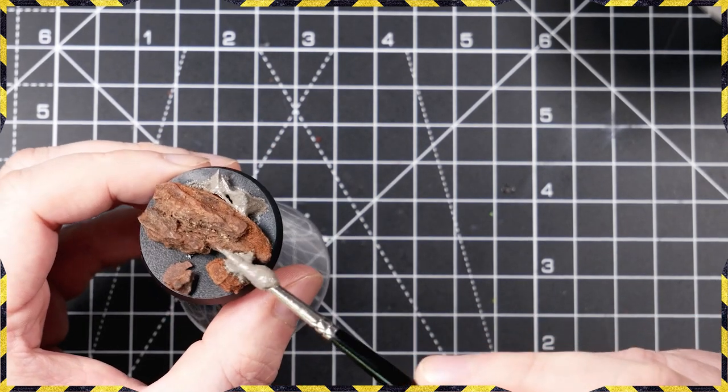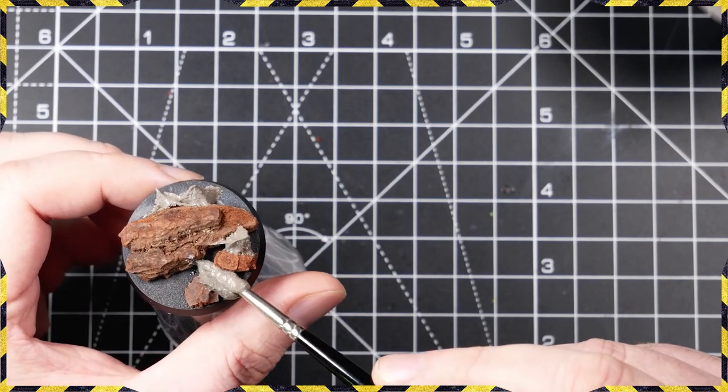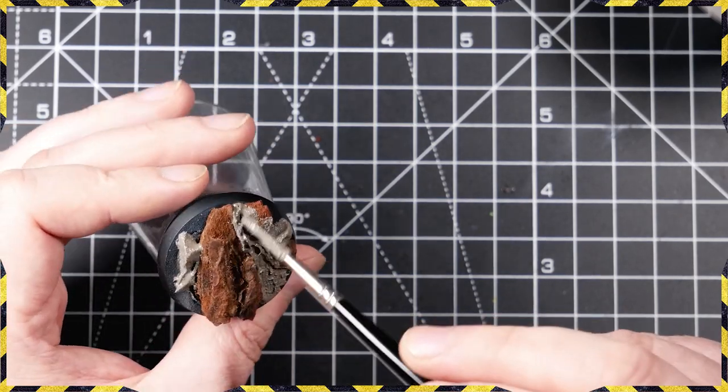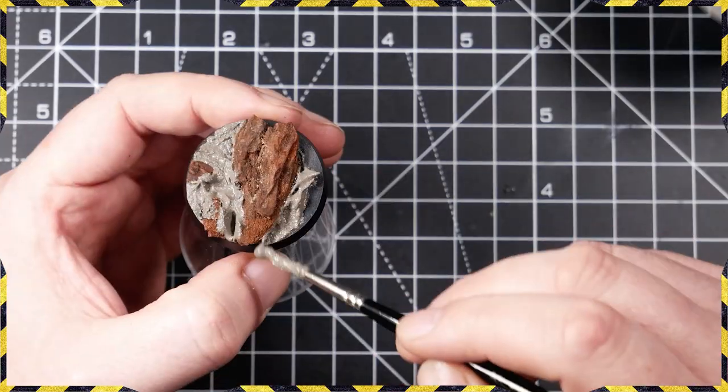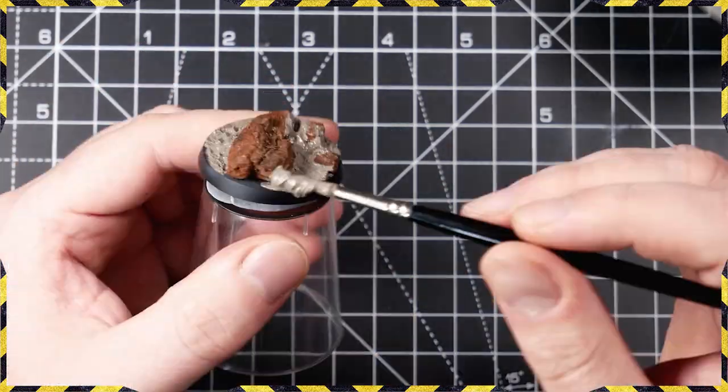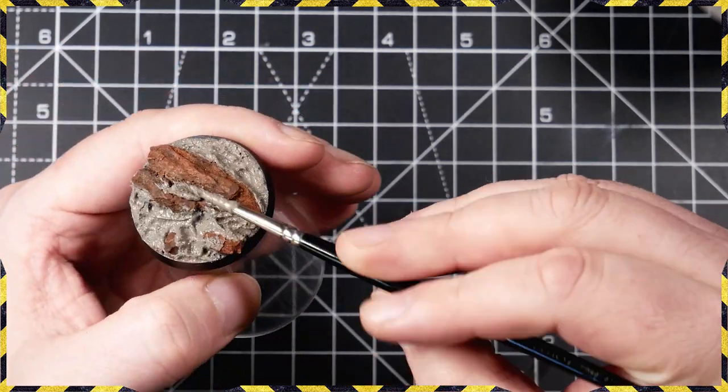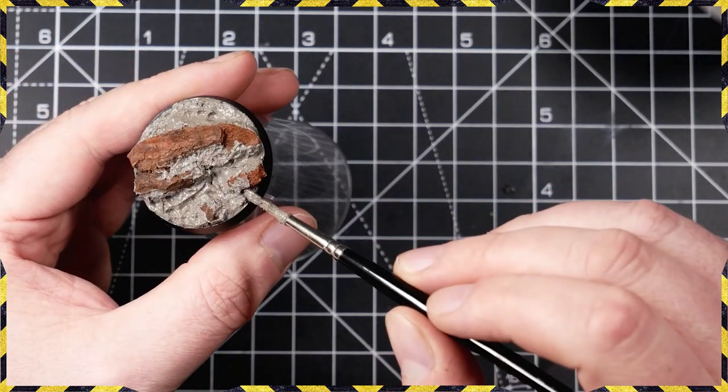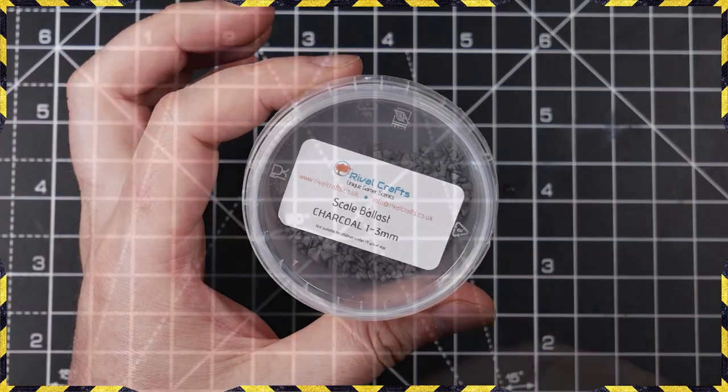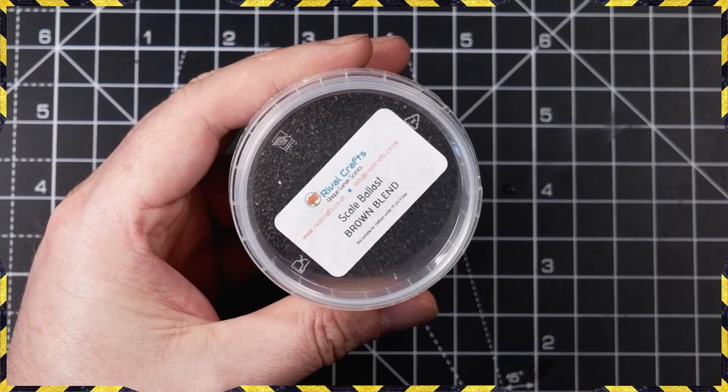This goes on every single part of the base that doesn't have a rock on it, but importantly it does go up the sides of the rocks to help bed them in. So just spooge that around the base and get everything nice and covered. Get that texture down. We're then going to start adding some more texture to it.